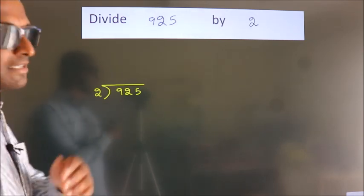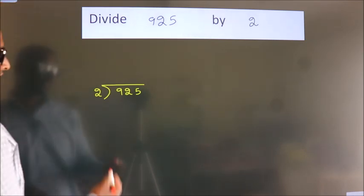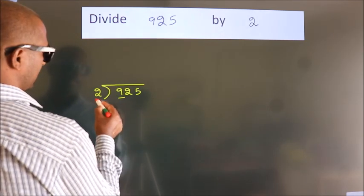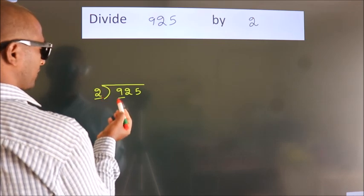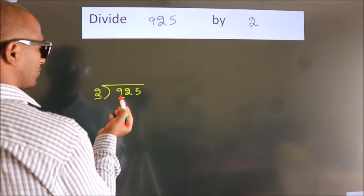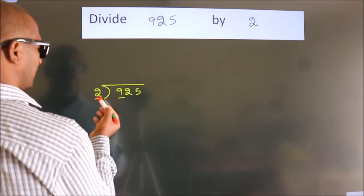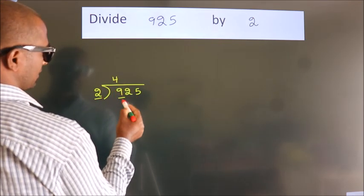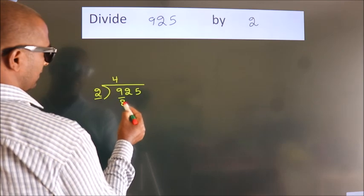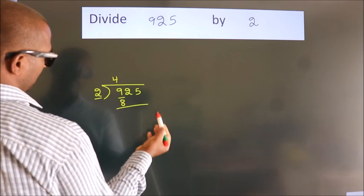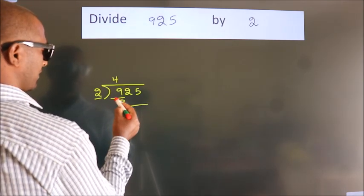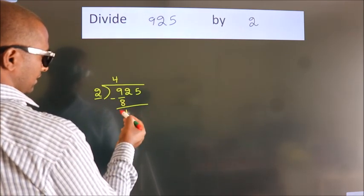Next, here we have 9, here 2. A number close to 9 in the 2 times table is 2 fours, 8. Now we should subtract. We get 1.